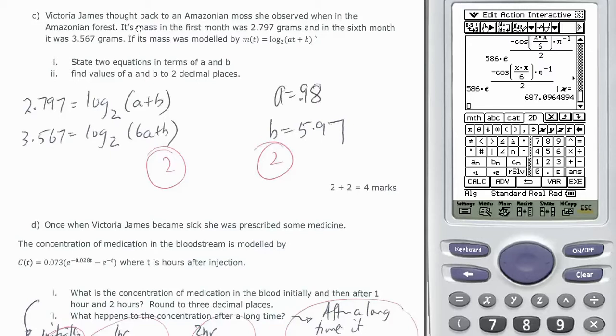Victoria James thought back to an Amazonian moss she observed in the Amazonian forest. Its mass in the first month was 2.797 grams and in the sixth month it was this. If the mass was modeled by this.